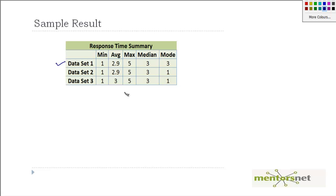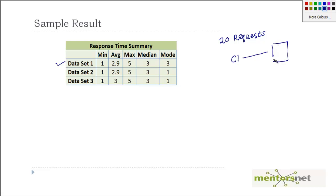In set one, we are sending 20 web requests. For each web request, we are getting what is the time taken to serve it from the server. So client C1 is sending to a server S1 twenty web requests. Let's call the requests T1, T2, up to T20 — so 20 transactions.